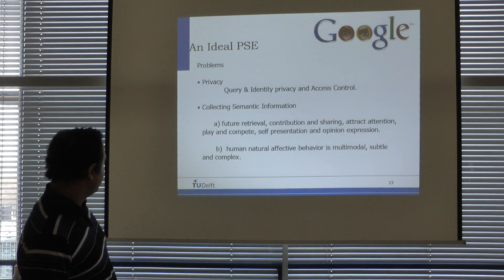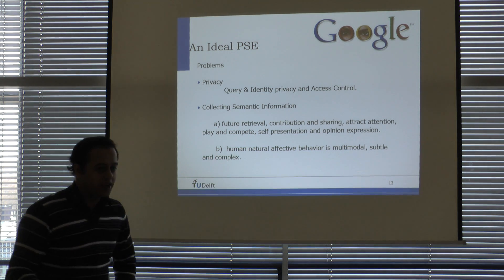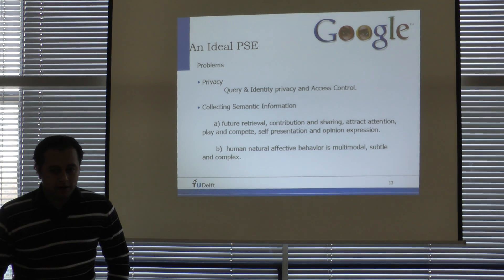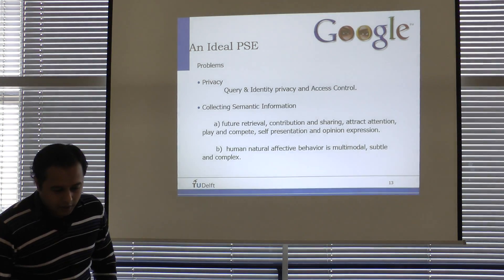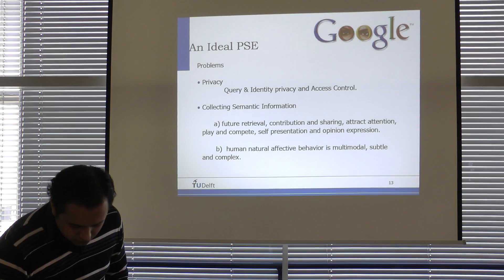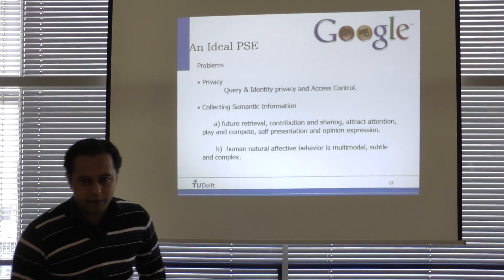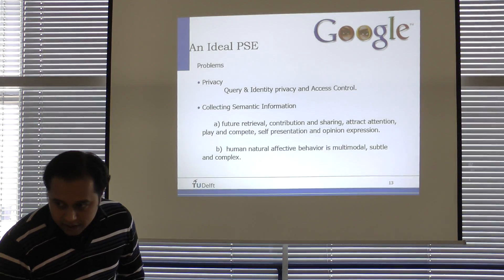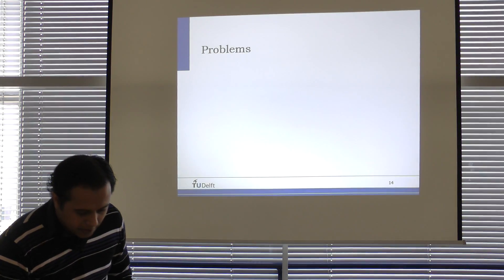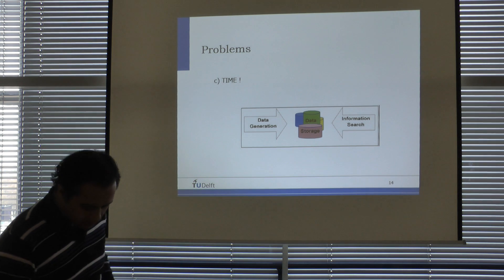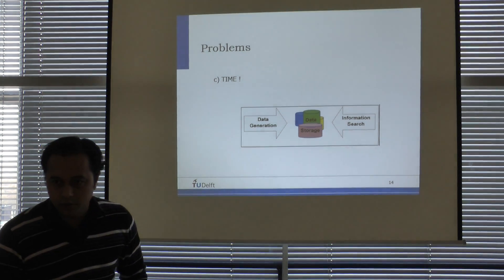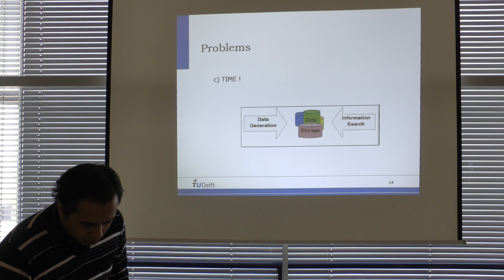Let's skip something, very fast. So what are the problems in trying to design an ideal personal search engine? Privacy, different kinds of privacy, query identity, semantic information is really tough, because people have different ways and reasons to tag, sometimes they don't tag, sometimes they tag selectively, so that is a problem. And of course the time is very important, because there will be a lot of data, and there will be a lot of search done, so this is very important.